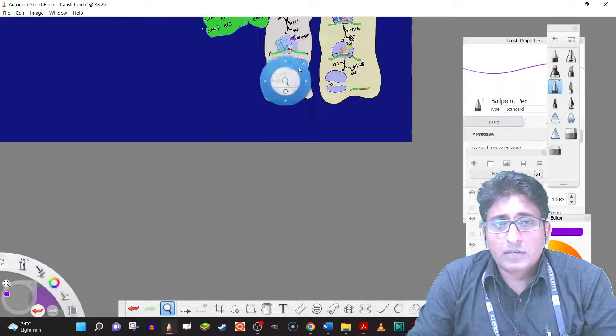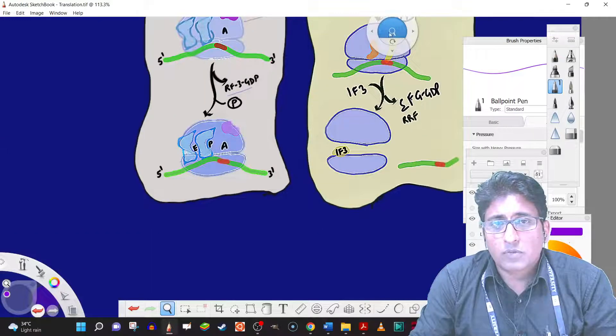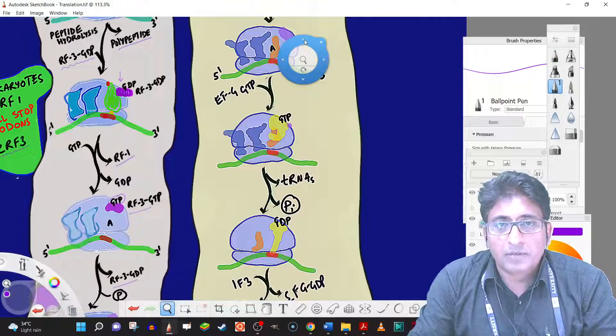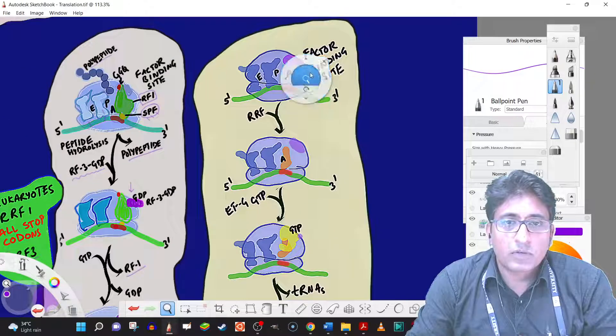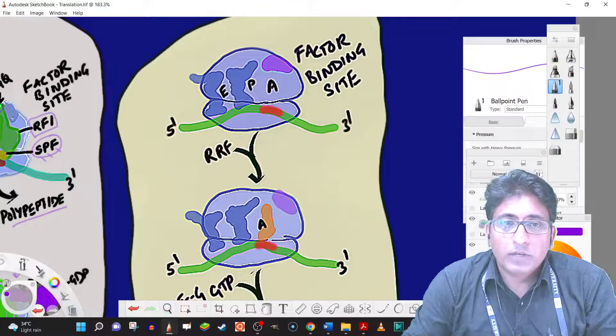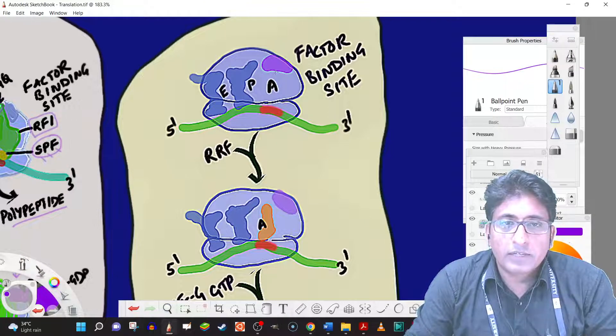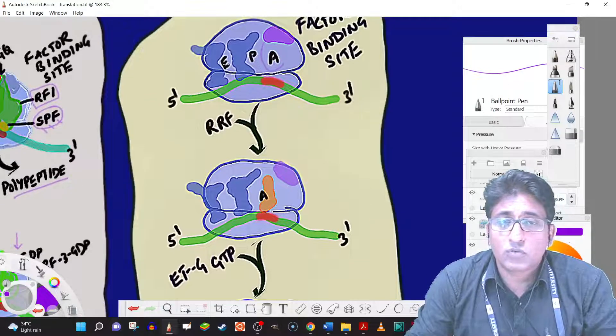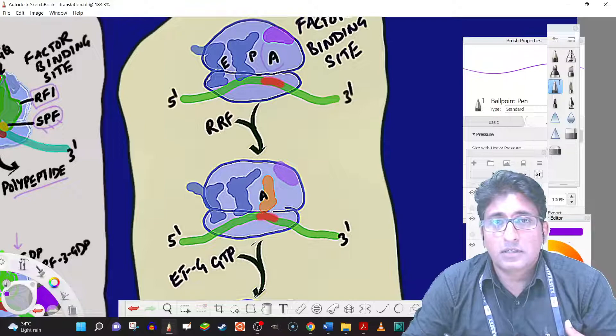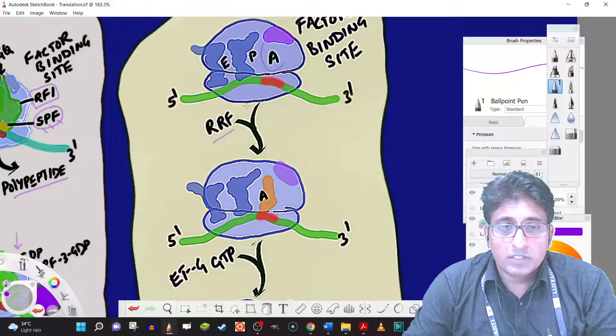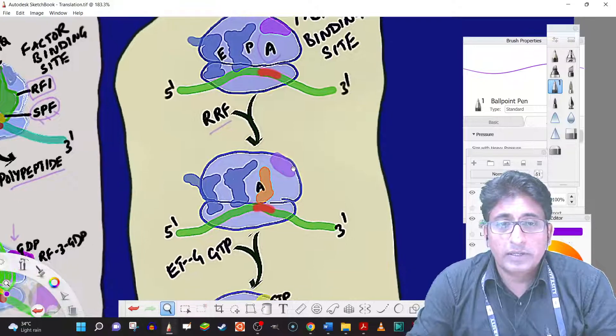The release or recycling of the ribosomes is done by another factor that is called as RRF, which stands for ribosome release factor. So here is the situation where we have the A site empty with these two tRNAs. The tRNAs at E and P and the mRNA.